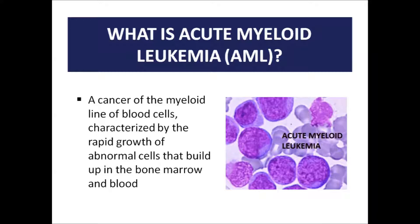What is acute myeloid leukemia? From the words, 'acute' means that the disease has rapid progression, and 'myeloid leukemia' is because it affects a group of white blood cells called myeloid cells. Acute myeloid leukemia is the most typical acute leukemia affecting adults. It is a cancer of the myeloid line of blood cells characterized by the rapid growth of abnormal cells that build up in the bone marrow and the blood. It begins in the bone marrow, which produces most of the body's new blood stem cells, and the stem cells develop into myeloid or lymphoid cells.